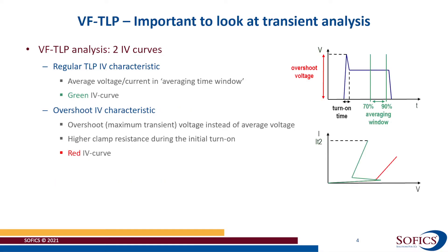In order to build up a VF-TLP IV curve, the measurement system typically averages the waveforms at the end of the pulses. However, the instantaneous voltage and current waveforms provide more details about the actual transient response if we look at the start of the pulse waveforms.